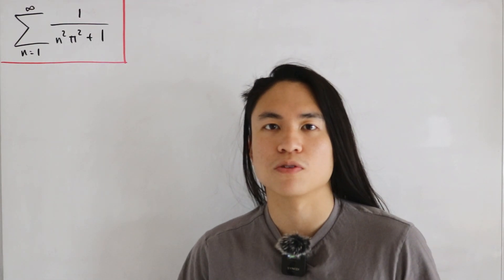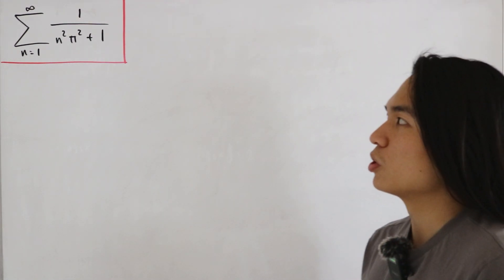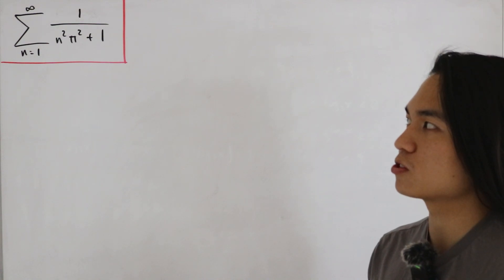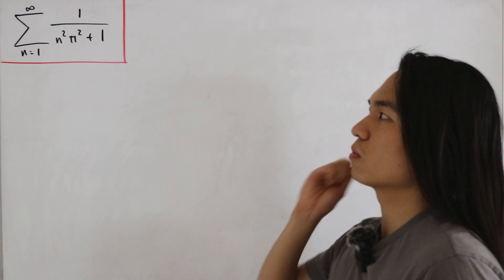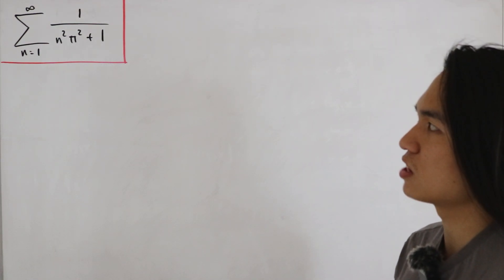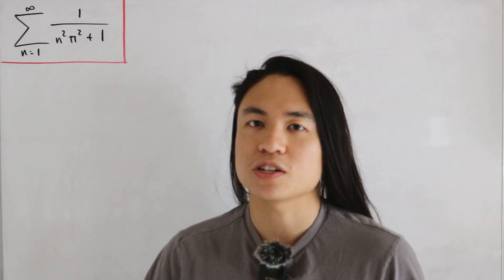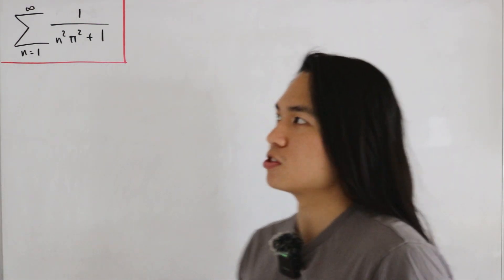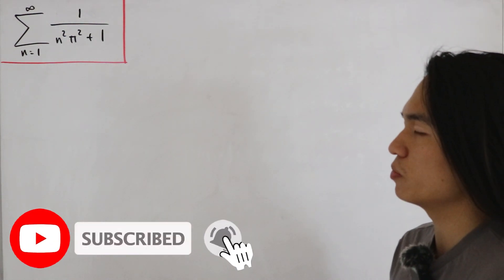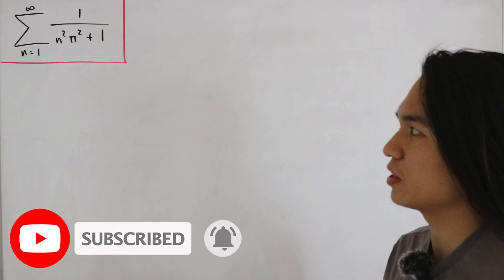Welcome back to another video. Here we have an infinite sum we would like to calculate: the sum from n equals 1 to infinity of 1 divided by n squared times pi squared plus 1. There are actually a lot of ways we can solve this, but the one I like specifically is utilizing hyperbolic functions to evaluate it.